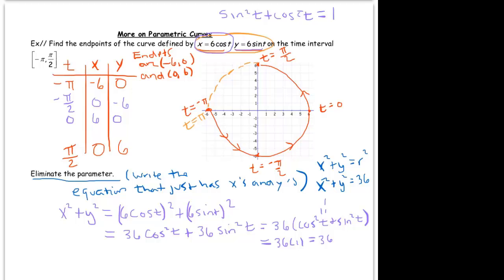So by eliminating the parameter, that means to write our equation just in terms of x and y. That graph up there is also known as x squared plus y squared equals 36. In parametric mode, it's known as x equals 6 cosine t, y equals 6 sine of t.